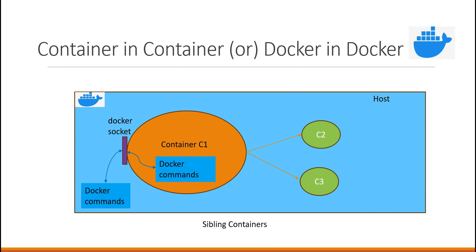To create container C1, we execute the corresponding docker run command, which communicates with the engine via this socket, and it creates container C1. Now we want to execute Docker commands within container C1. If we share this Docker socket from the host machine to container C1, the Docker commands executed within the container can reach the Docker engine via this socket file. That means whatever commands we execute within container C1 are executed in the same way as Docker commands on the host. Those Docker commands will create containers within the host machine — like C2, C3, and so on — and these are siblings to container C1.